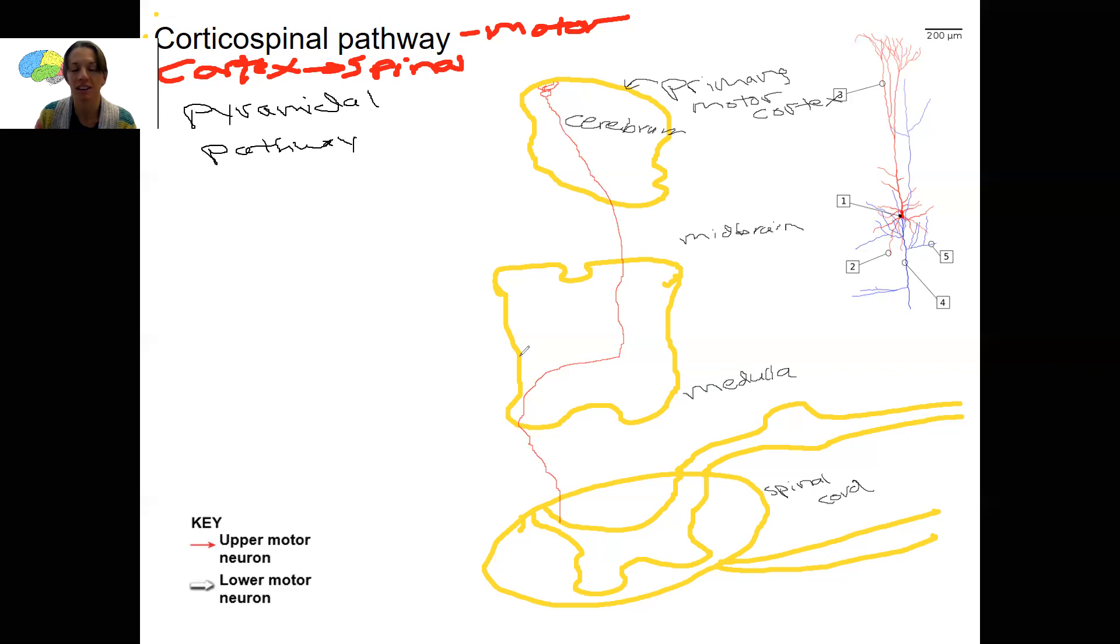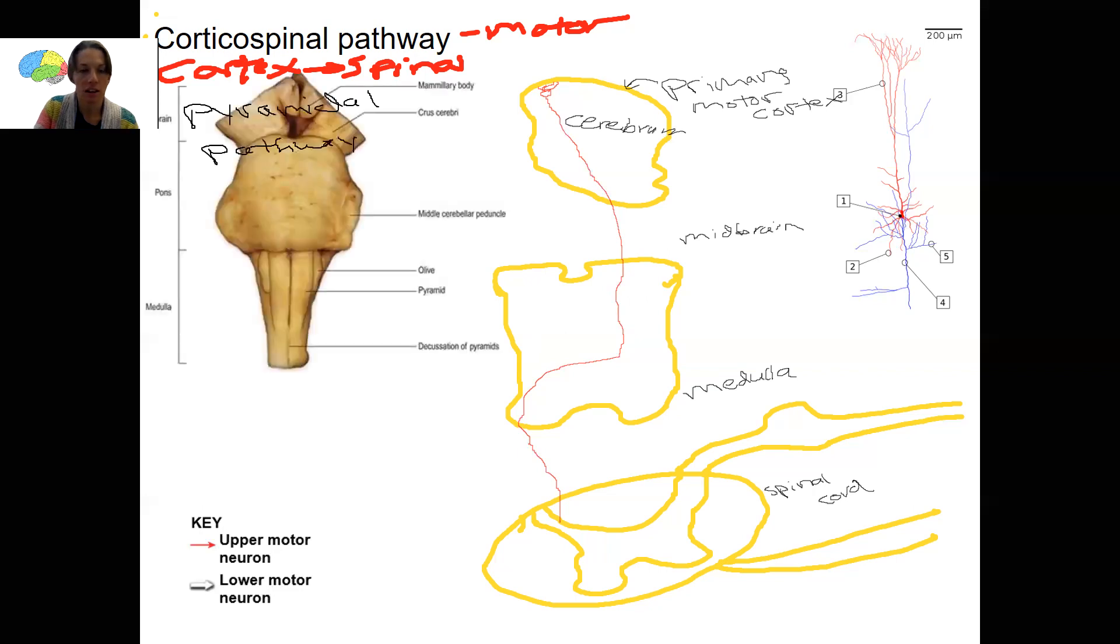So decussation means to cross. I want to remind you here what that looks like. This is an image of the midbrain stem. Here, midbrain, pons, medulla. Here are those pyramids. These are the axons of those pyramidal cells that come from the primary motor cortex. Isn't that cool? And then here they decussate, which means cross to the other side.